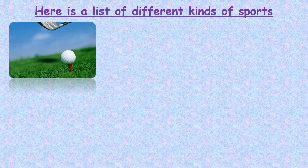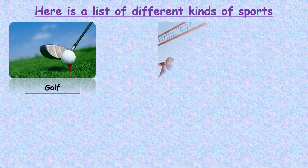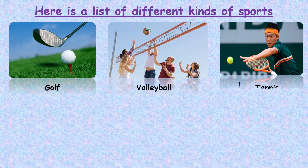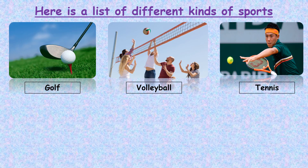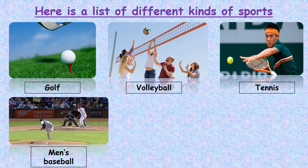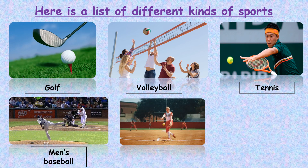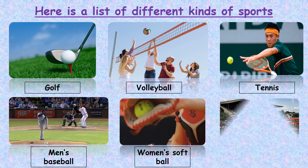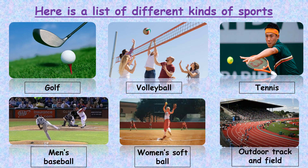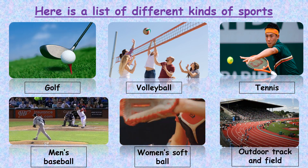Here is a list of different kinds of sports we can play in spring: golf, volleyball, tennis, men's baseball, women's softball, and outdoor track and field games.